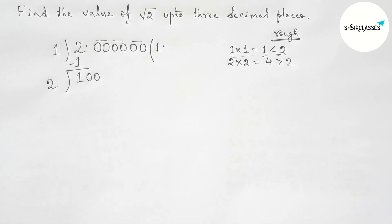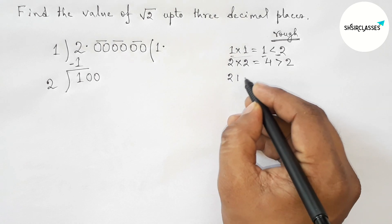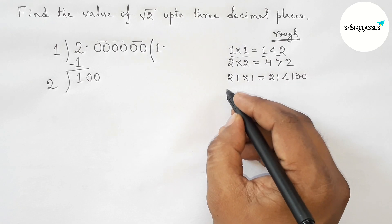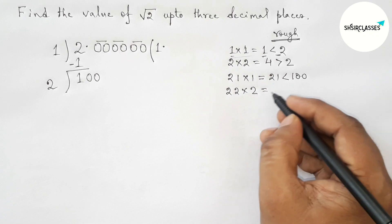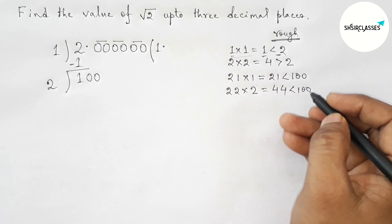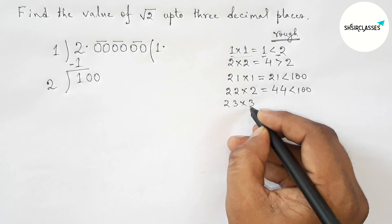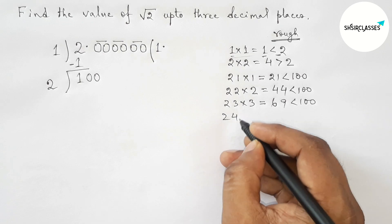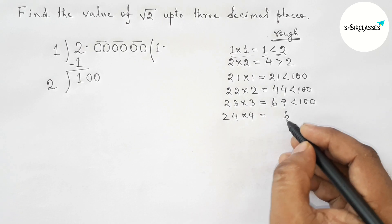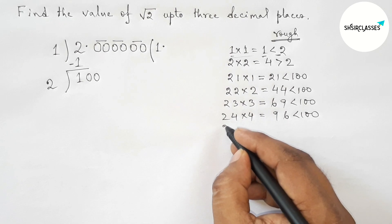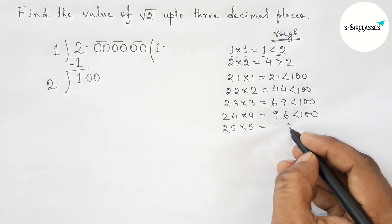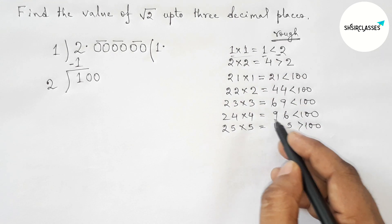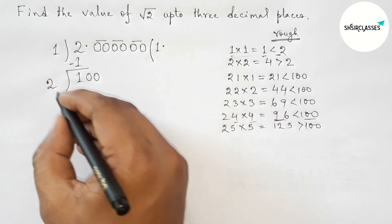We have to put a digit beside 2 and multiply by that digit such that the result is less than 100. Taking 1: 21×1=21. Taking 2: 22×2=44. Taking 3: 23×3=69. Taking 4: 24×4=96, which is less than 100 and closest to 100. Taking 5: 25×5=125, which is greater than 100.